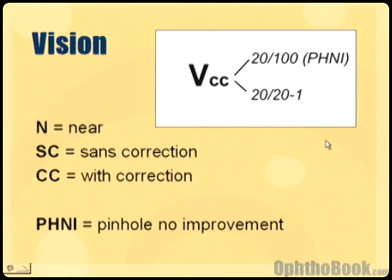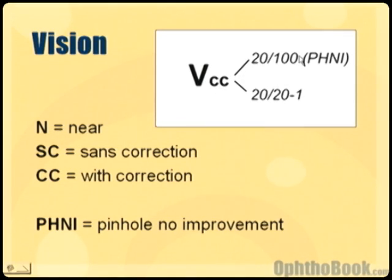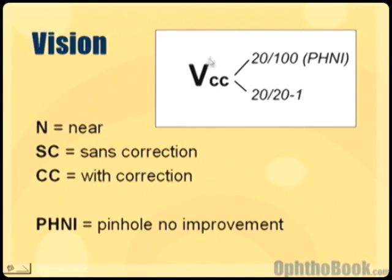The first vital sign is vision. In our note we write vision in a standard format: a big V for vision, C meaning with correction (basically with glasses), the right eye on top and the left eye on the bottom. So this patient is 20/100 with pinhole no improvement in the right eye, and 20/20 minus one — meaning they missed one letter on the 20/20 line — in the left eye. We can also use a big N to indicate near vision, and SC means without correction.